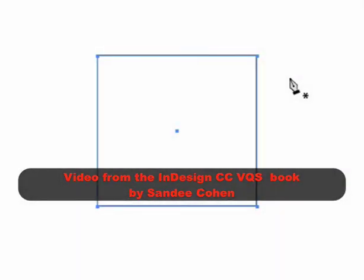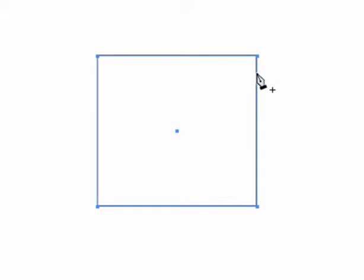When you're working with the pen tool, you can come over an existing path and add a point, or come over an existing point and delete a point.